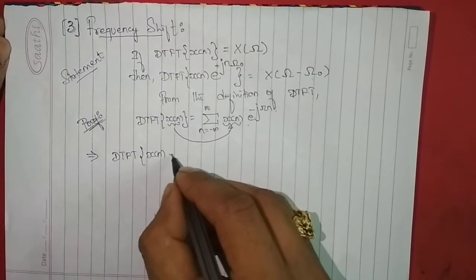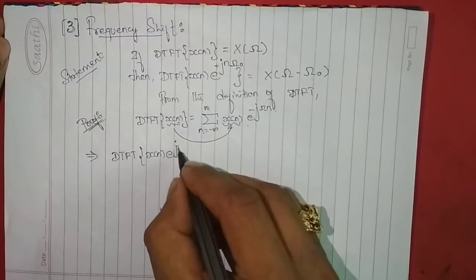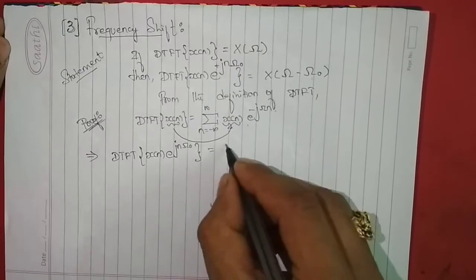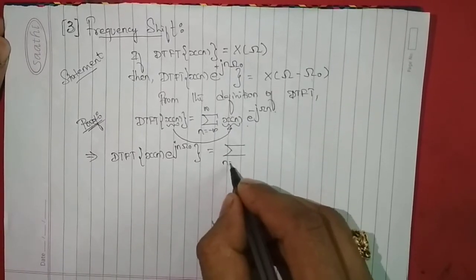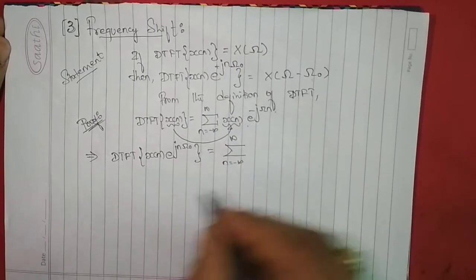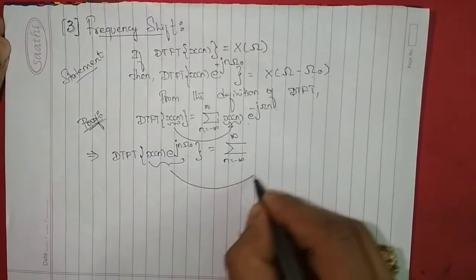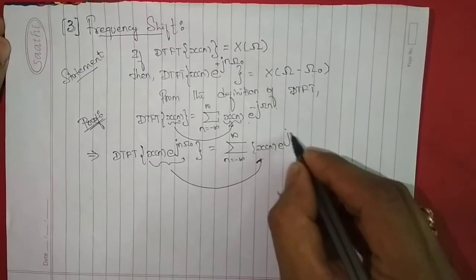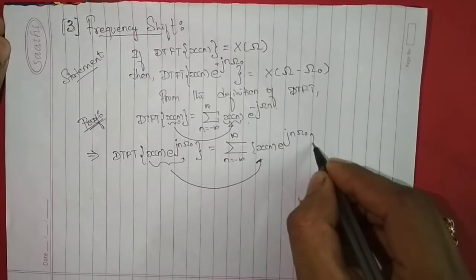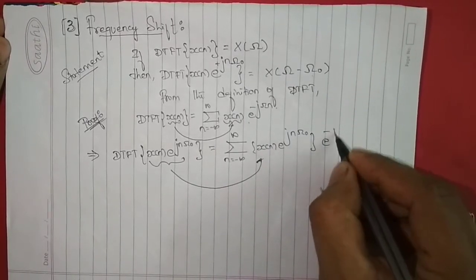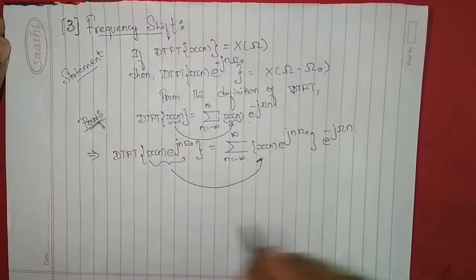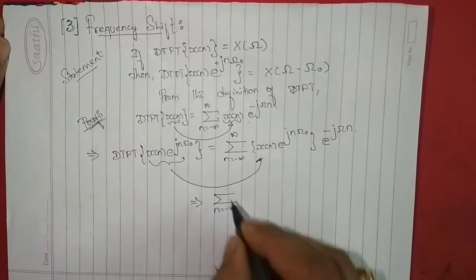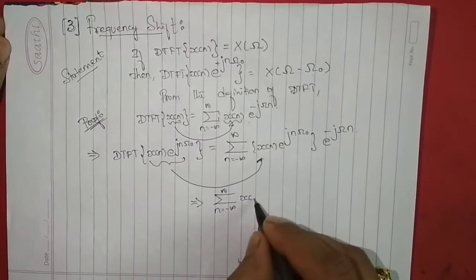So the DTFT of x(n) times e to the power of +jnω₀ — this is what we need to prove — is equal to the summation from n = -∞ to +∞ of x(n) times e to the power of +jnω₀ times e to the power of -jωn.